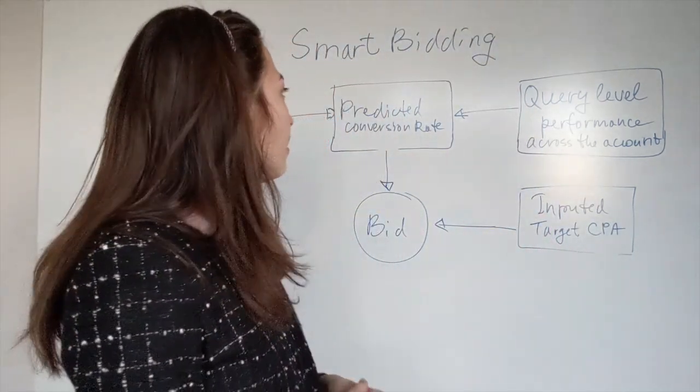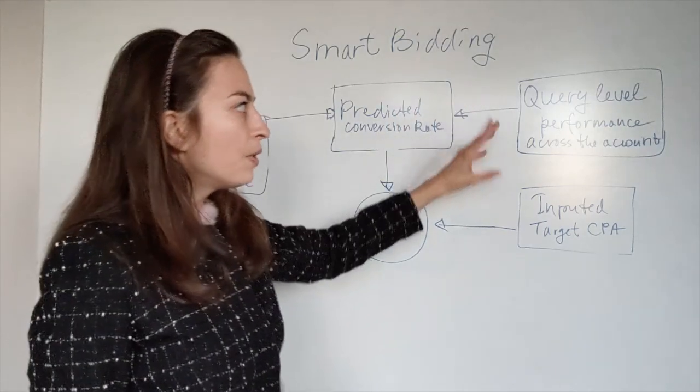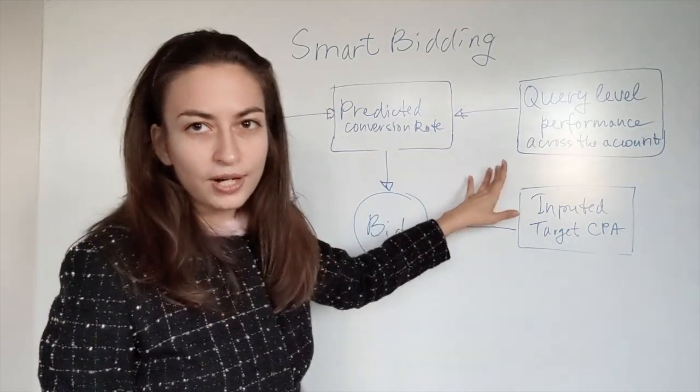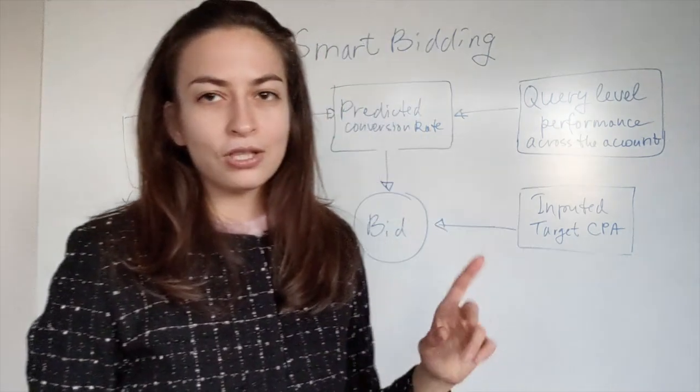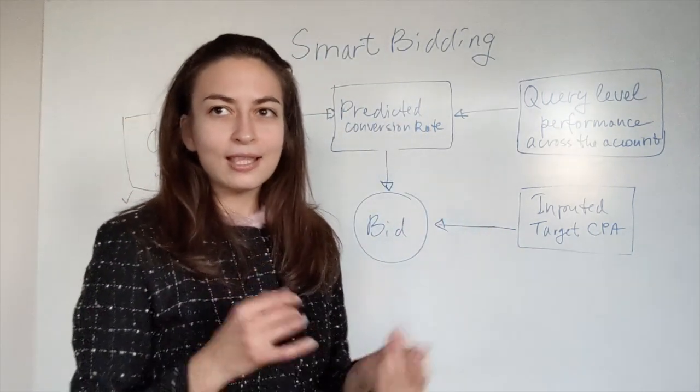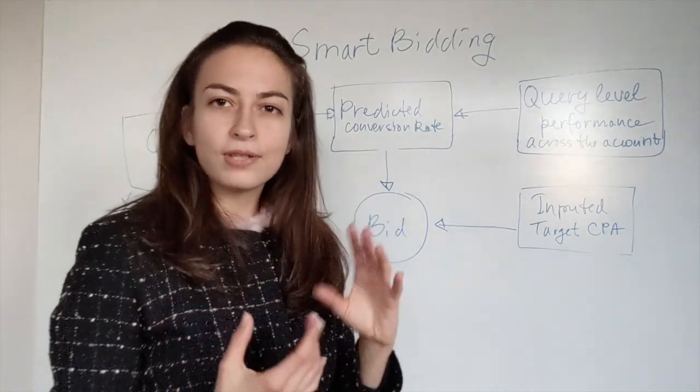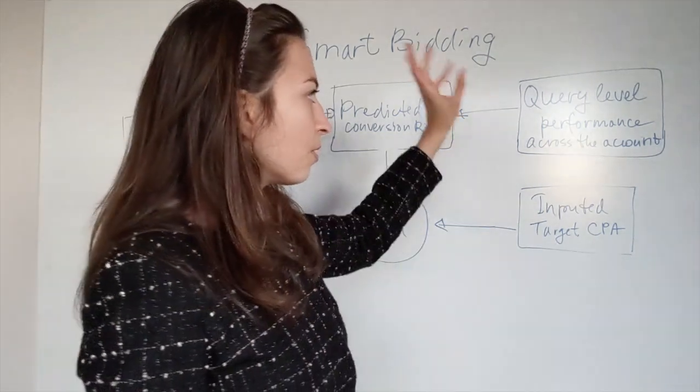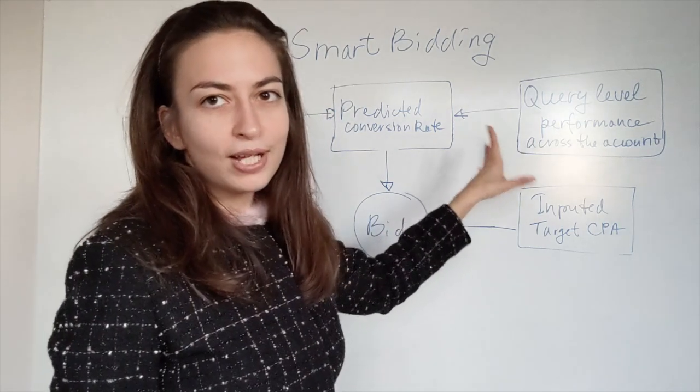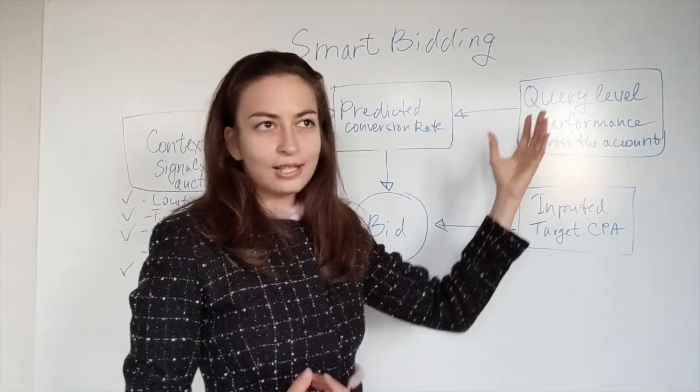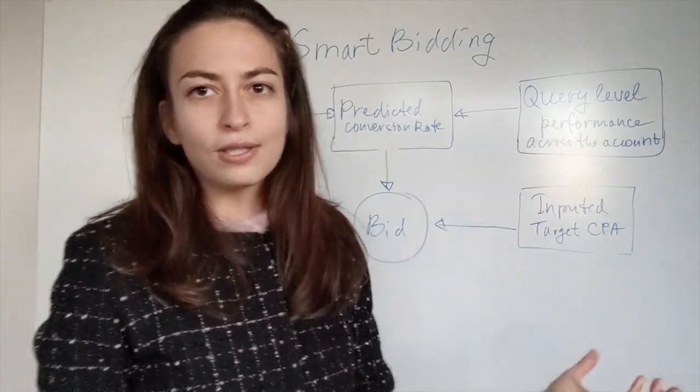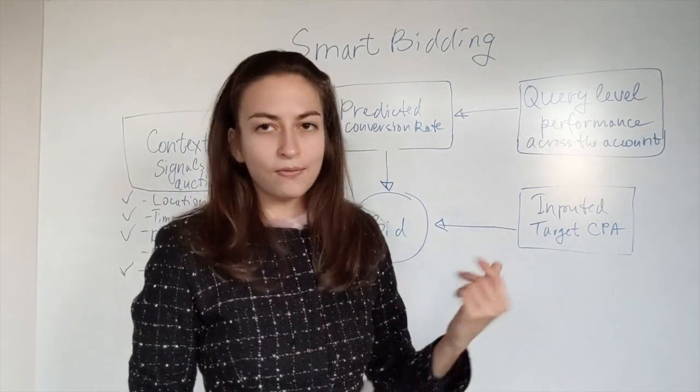Then another thing: the query level performance across your account. We said that Google can make prediction based on the actual query and they set the bid automatically on every single query. Also, the query level performance of your account: how different queries which get matched to your keywords perform best for your account.